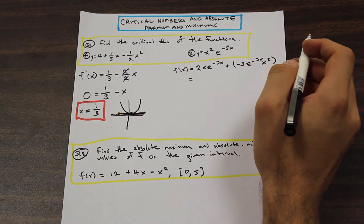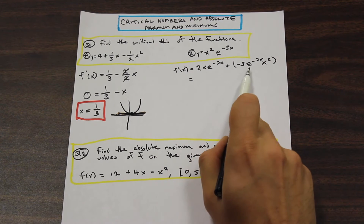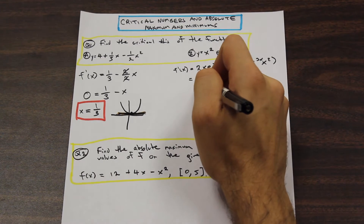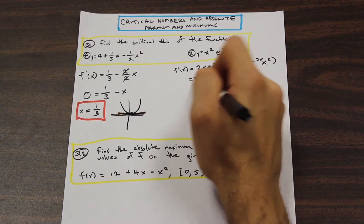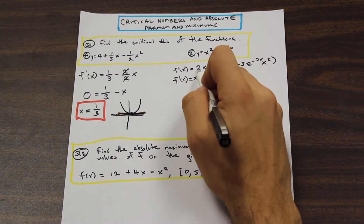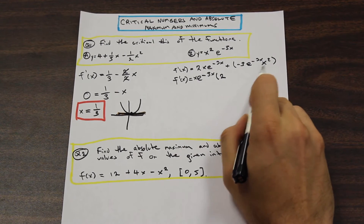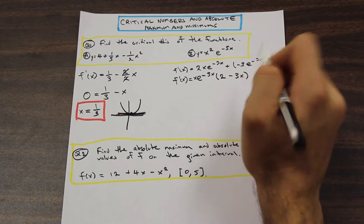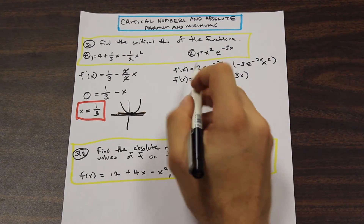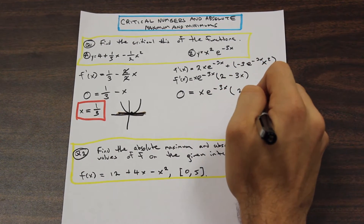Let's simplify this. We can factor out x e to the negative 3x from both terms, leaving us with 2 minus 3x inside the bracket. So we have f prime of x equals x e to the negative 3x times the quantity 2 minus 3x. Now we equal the derivative to zero: x e to the negative 3x times (2 minus 3x) equals zero.